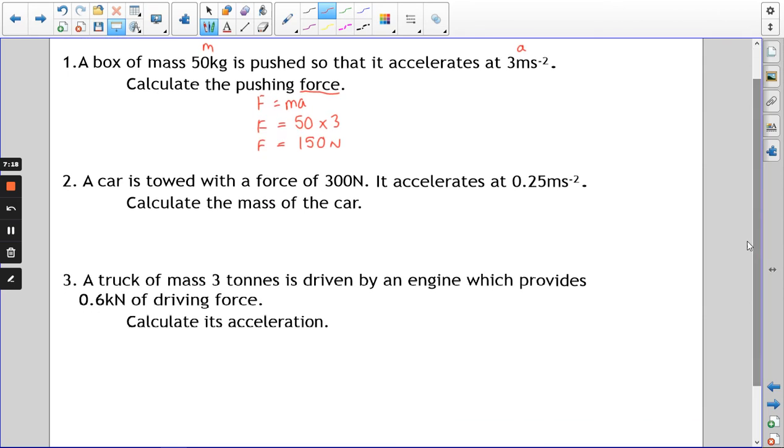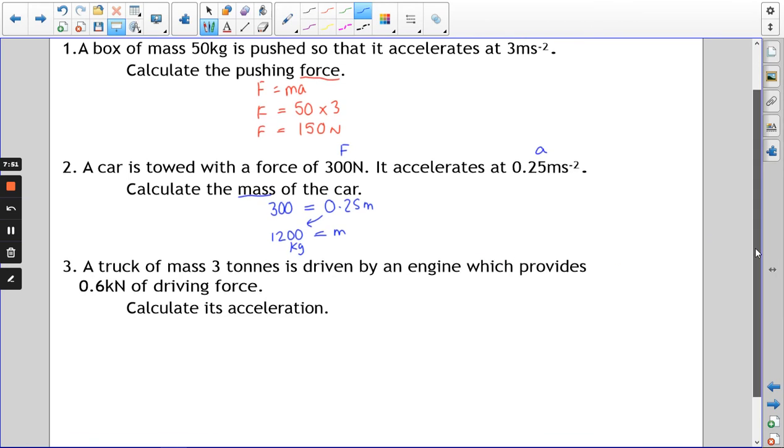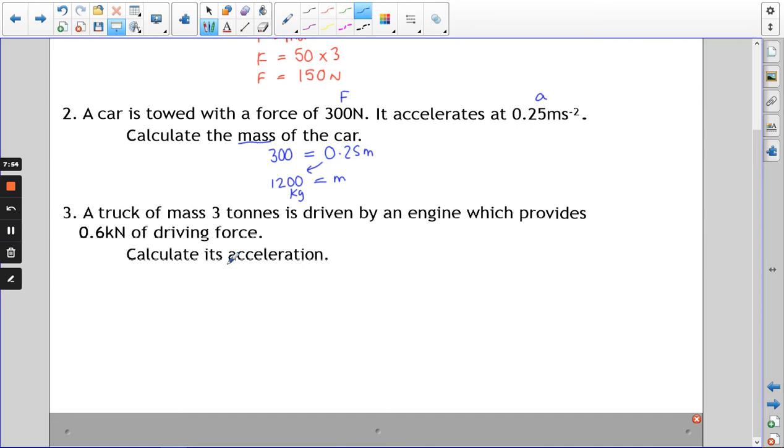The next one: we've got the force this time and we've got the acceleration, and what we're missing is the mass. So 300 equals 0.25m. If you do 300 divided by 0.25, you'll get that 1200 equals m. So the mass of the car is 1200 kilograms. Remember we're in SI units, so any answer you get is kilograms.